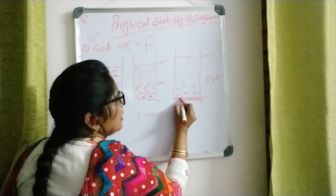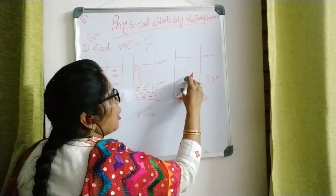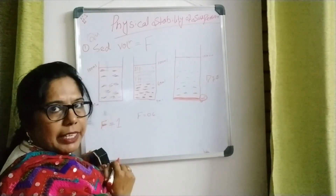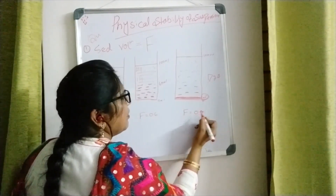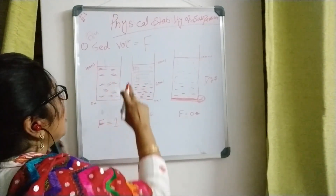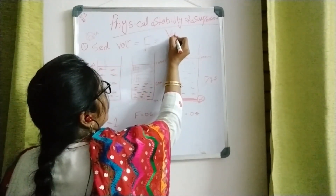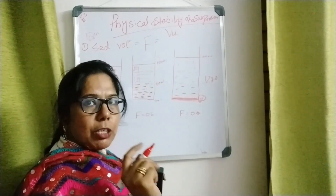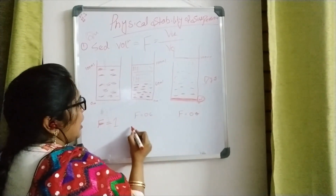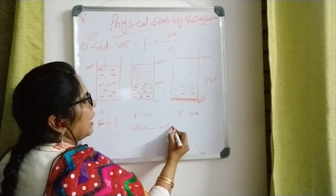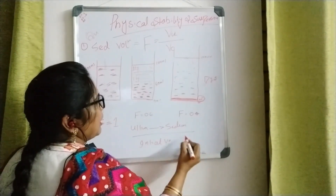Now the formula: F equals ultimate volume of sediment divided by initial volume of the suspension. Ultimate volume of sediment divided by initial volume of suspension. For example, the initial dispersion was 100 ml — that is the initial volume of suspension. I have prepared the suspension and kept it for half an hour or two hours. Later, I observed that settling of particles has taken place up to 60 ml. So the F value is 60 divided by 100, which equals 0.6.